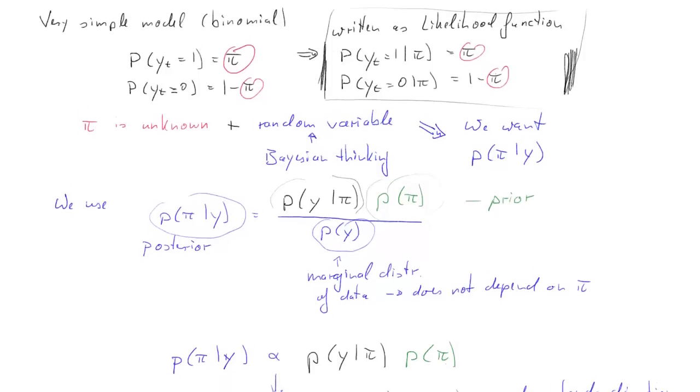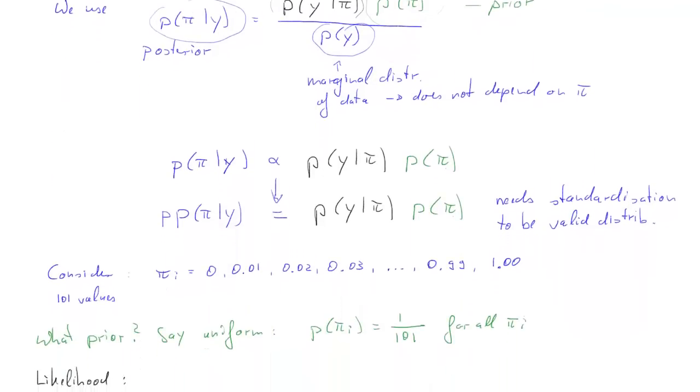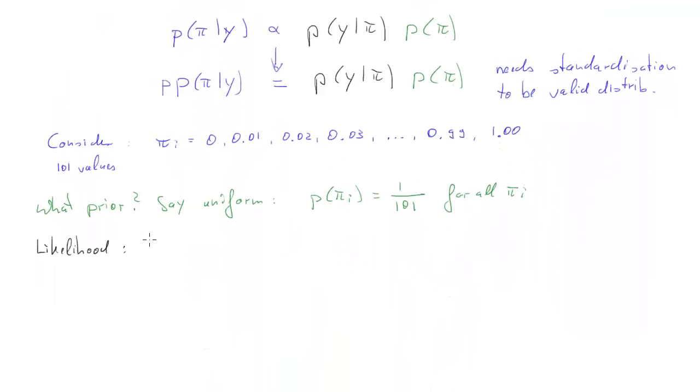What about the likelihood? We already have that up here. We had said that the probability of y equals 1 is just pi. It's a binomial type random variable. I can write this down in a very general form, regardless of what value yt we have. We can say probability is pi i to the power yt plus 1 minus pi i to the power 1 minus yt. And you can see that yt and 1 minus yt term, this will switch off one of the two summands depending on what value yt is.